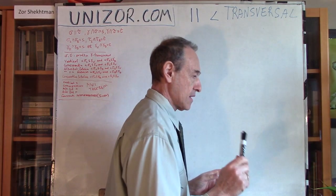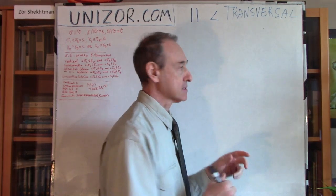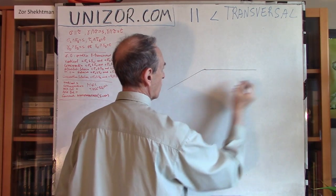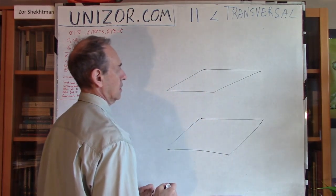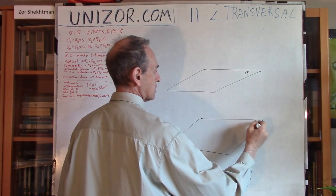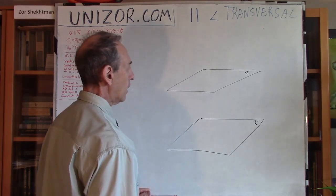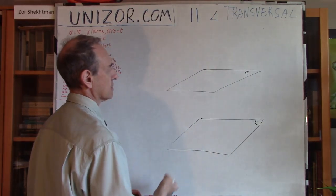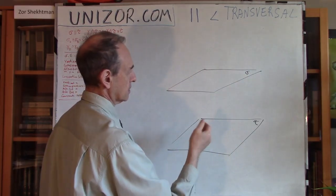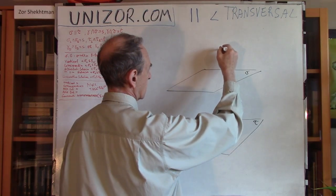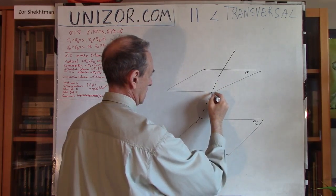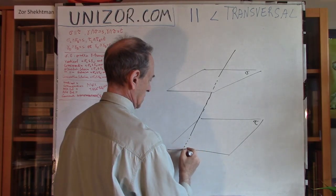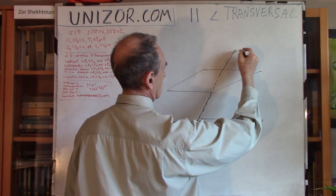Let's assume that two parallel planes are horizontal, like this. I can try to draw them — this is one plane and this is another plane. This is sigma and this is tau. Now we will have a plane which intersects them, and the view will be like this — it intersects here and here.